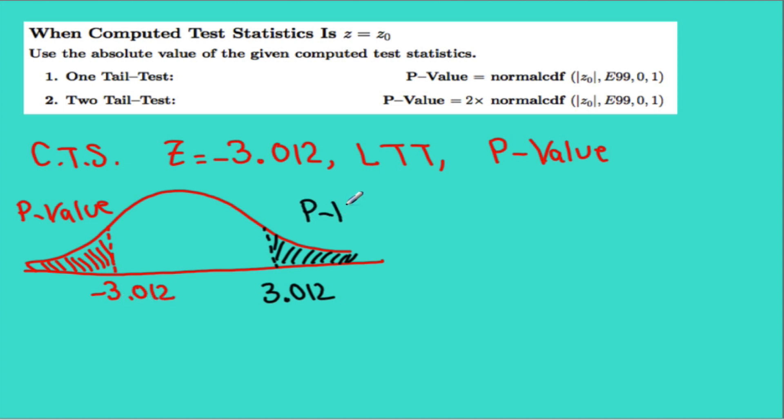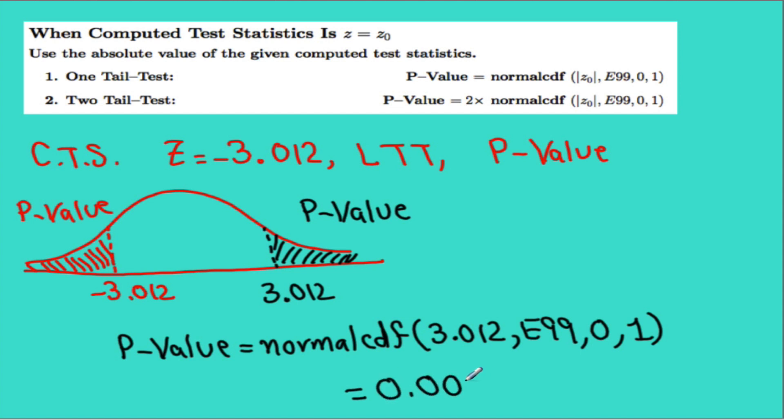The area from 3.012 to the right would be the same as the area from negative 3.012 to the left. So to find the p-value we're going to use normal CDF. Our lower value is 3.012, our upper value is E99 with the mean of 0 and a standard deviation of 1, and the answer is 0.0013. If this was a two-tailed test we have to multiply this result by 2.